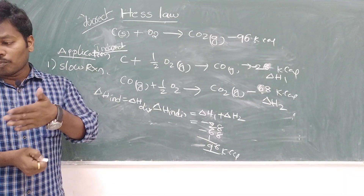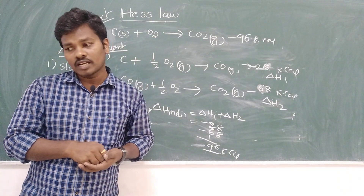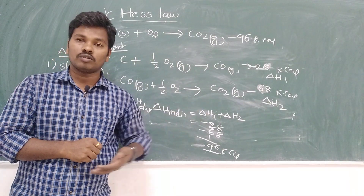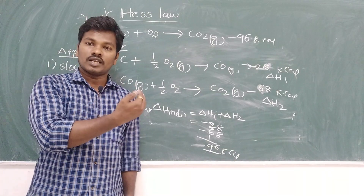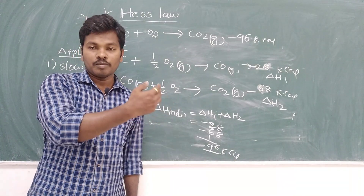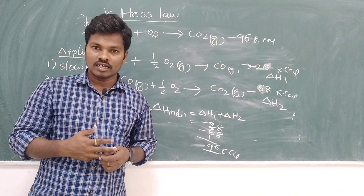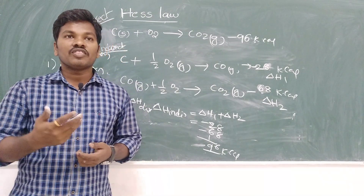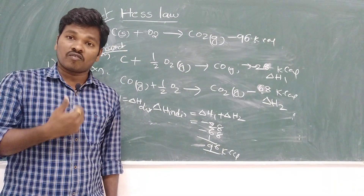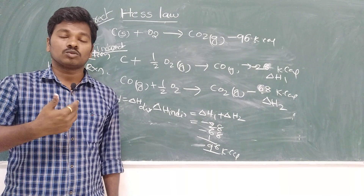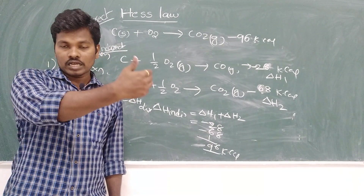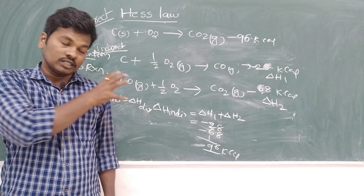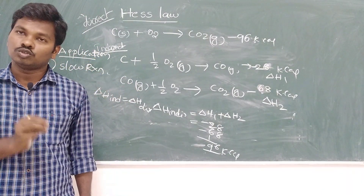Using Hess's Law, you can also calculate bond energies: bond energy enthalpy = bond energy of products minus bond energy of reactants. Additionally, you can calculate enthalpy changes in allotropic transformations — for example, converting one allotropic form to another. Hess's Law is useful for all such applications.